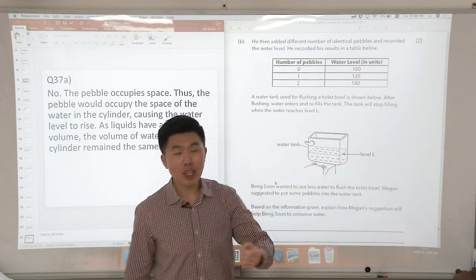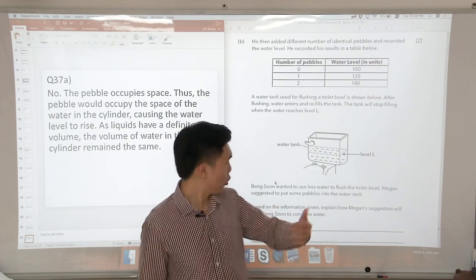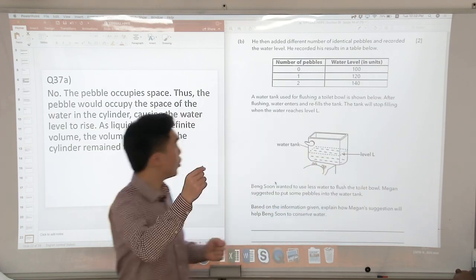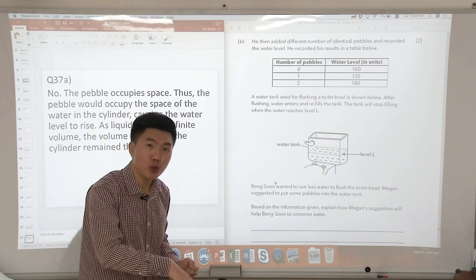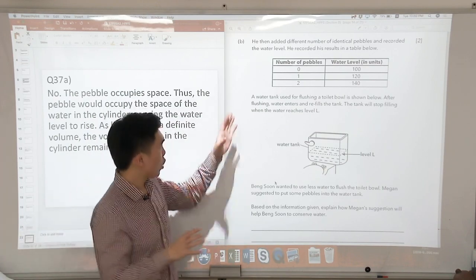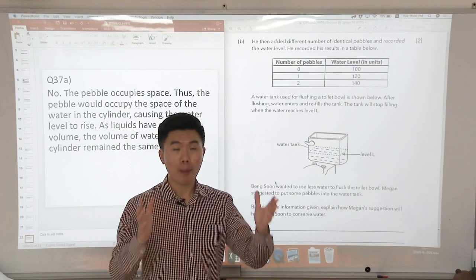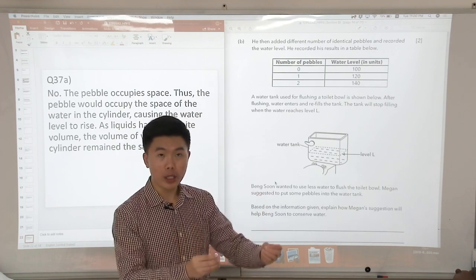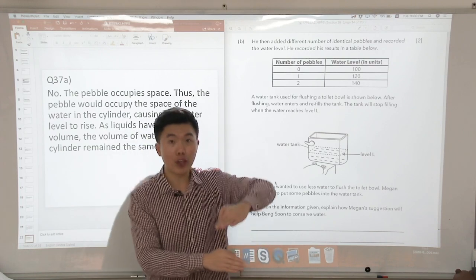So how do we use less water to reach the water level L as shown in the diagram? If we were to put some pebbles into the water, as what we've seen in the first part of the question, the pebbles would occupy the space of the water which will cause the water level to increase.